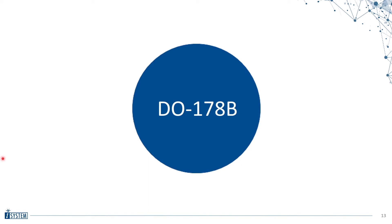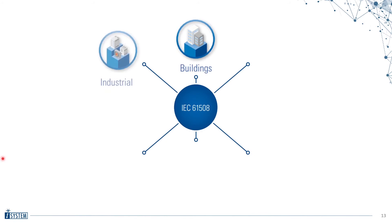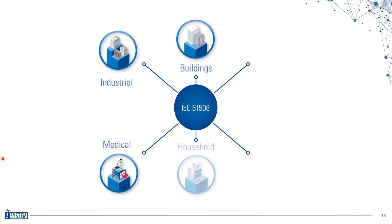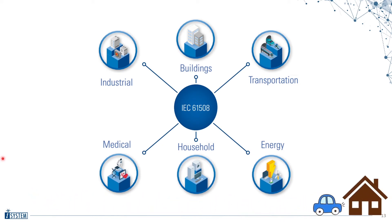With its roots stemming from DO-178B, functional safety adopted a generalized standard in the industrial IEC 61508, which is now known as the basic functional safety standard applicable to all kinds of industry: buildings, industrial, medical, household, energy, and transportation. Testing is an integral part to keep all of us safe on the drive home or the next flight we might take.